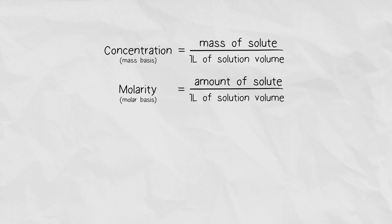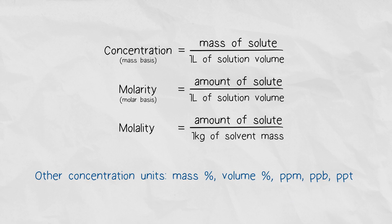So there are generally two ways to indicate the concentration, either using a mass basis or the molarity, which is a molar basis. Later on, you'll learn about different ways to indicate the concentration, such as the percentage, the ppm, the ppb, the ppt, all of those stand for parts per million, parts per billion, and parts per trillion, respectively.